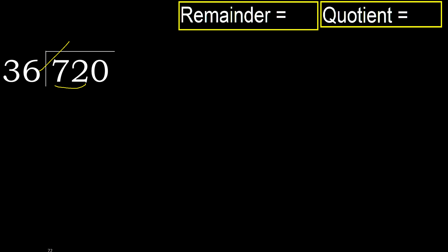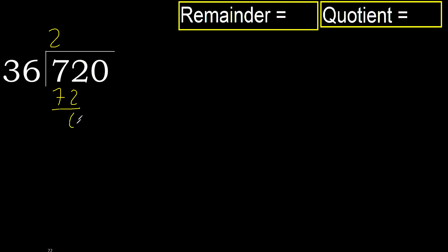36 multiplied by 3 is greater. Multiply by 2: 72. It's not greater. 72 minus 72 is 0.